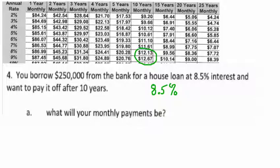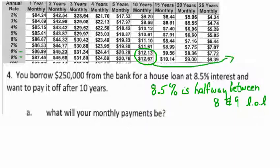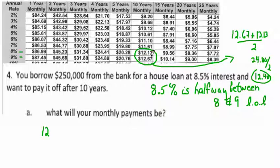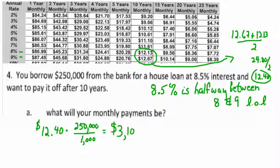Let's try this one: you borrow two hundred fifty thousand dollars at eight point five percent for ten years. The table doesn't have eight point five, but you know eight is twelve dollars and thirteen cents and nine is twelve sixty-seven. Eight point five is halfway — add them together and divide by two to get twelve dollars and forty cents. That's called interpolating — figuring out numbers between other numbers. Your payments are going to be three thousand one hundred dollars a month.